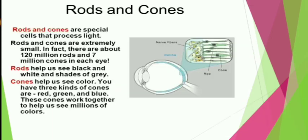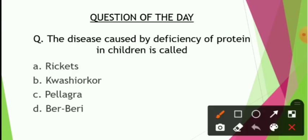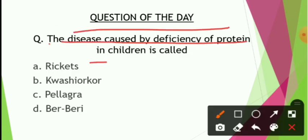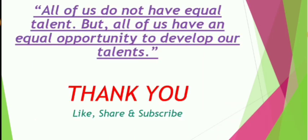This is the question of the day: The disease caused by deficiency of protein in children is called — Rickets, Kwashiorkor, Pellagra, or Beriberi? Go to the comments section and answer. This is going to be very beneficial for you.